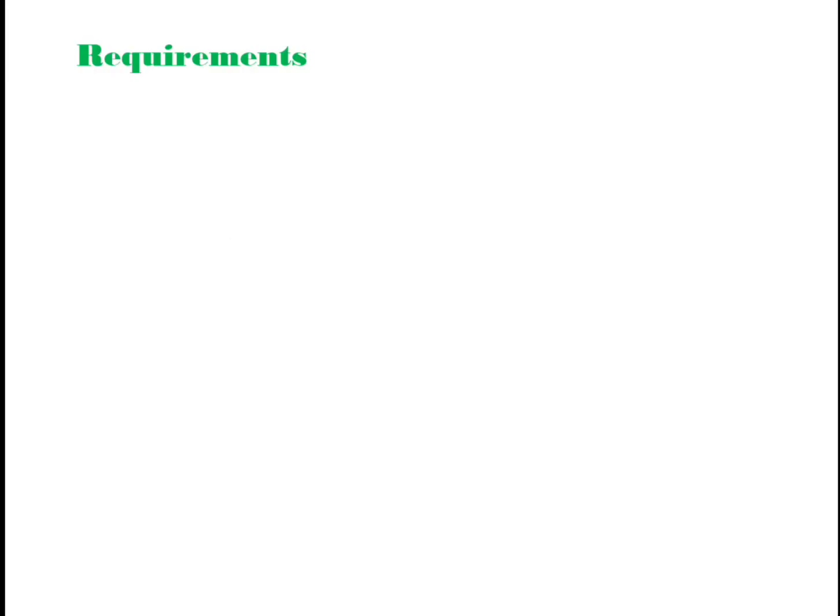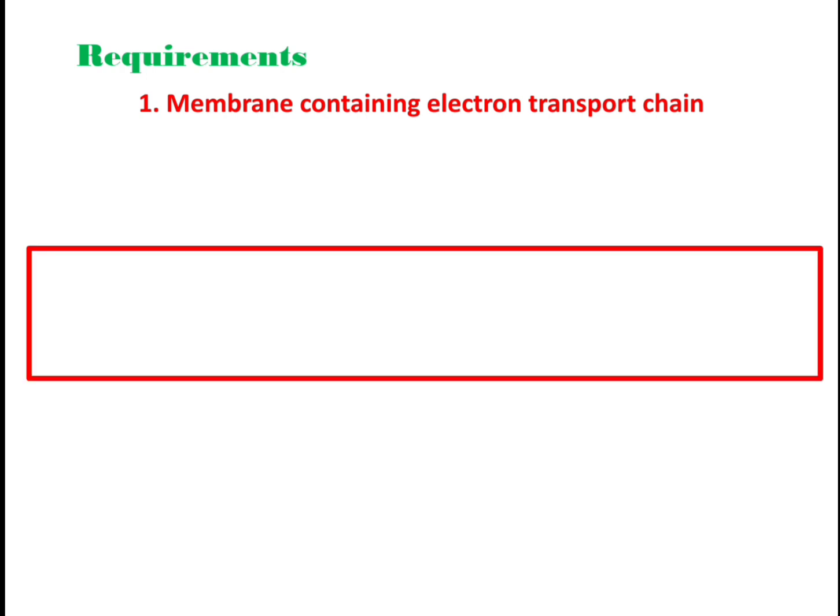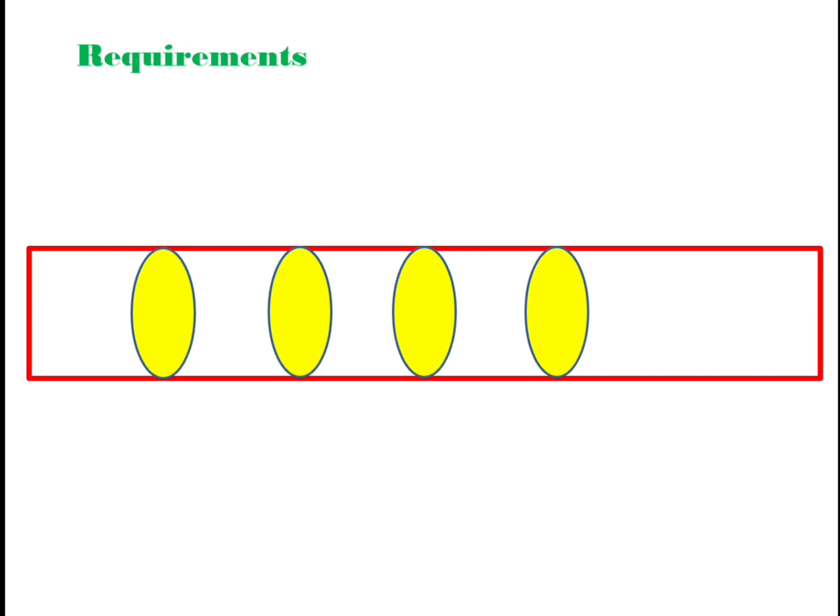Let's understand how ATP synthesis occurs with the help of this Chemiosmotic Hypothesis. According to this hypothesis, the first requirement within the cell is a membrane containing electron transfer chain. These electron carriers are collectively called as electron transport chain.